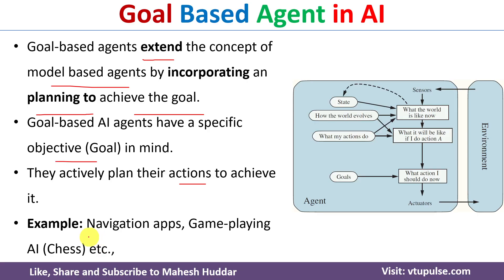For example, if you consider navigation apps like Google Maps, whenever you put a source and destination, the algorithm will find an optimal path from source to goal state — or destination — rather than just giving any random path.